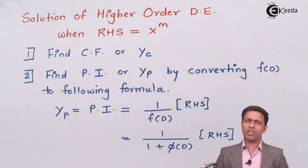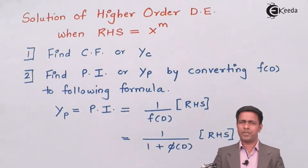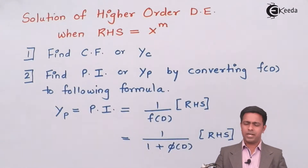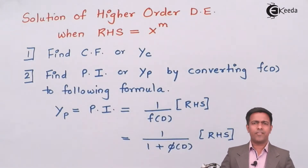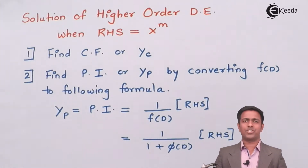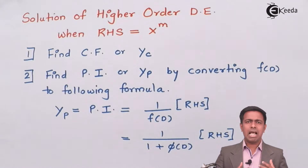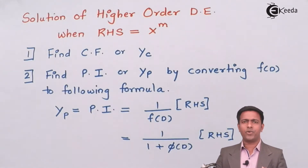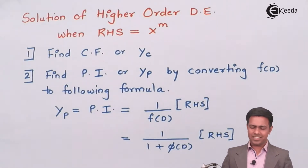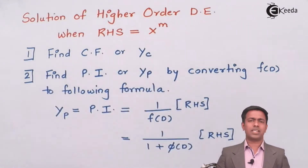To find the complementary function, we use steps already learned in the previous video. First, we find the auxiliary equation, then find its roots, and from those roots we determine the complementary function. That is step number one.